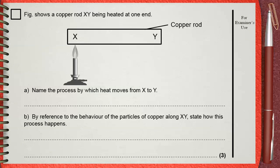Figure shows a copper rod XY being heated at one end. Question a: Name the process by which heat moves from X to Y.